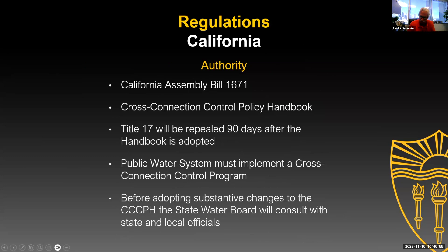Assembly Bill 1761 is the bill that was passed that gave authority to the state water board to create this handbook and gave the authority of law to the handbook. Once it is published, it basically becomes law. Once it is actually adopted, then 90 days later Title 17 will be repealed, and it will no longer be the law of the land — it'll be the new California Cross-Connection Control Policy Handbook.